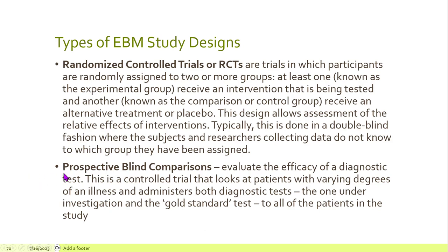For therapeutic studies and treatment evaluation, often the best type of study is a randomized controlled trial, or RCT. Randomized controlled trials test the efficacy of a treatment by randomly assigning participants to two or more groups. One group serves as a control, usually receiving a placebo. The investigators are typically blinded so they do not know which participants are in which group until after the study is completed, keeping them from adding unintended bias into the data set.